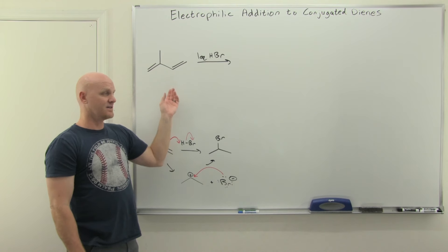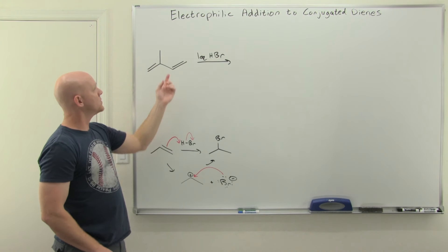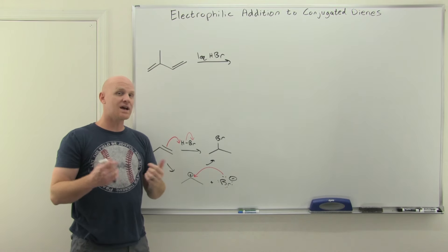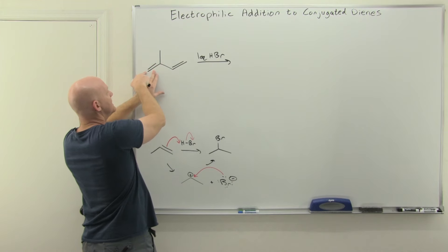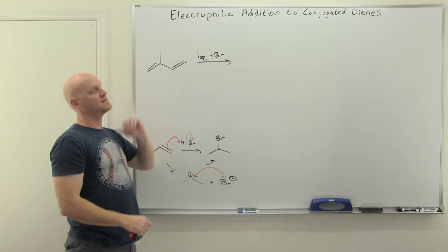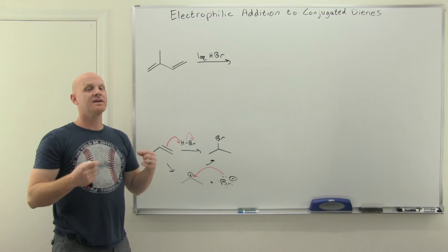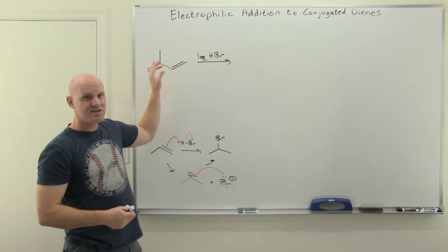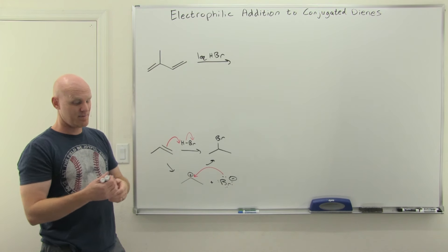When you've got a conjugated diene and you add only one equivalent in one of these electrophilic additions, you have an issue: which alkene is the one to more likely react first? That depends on which one can produce the more stable carbocation. If you look at the alkene on the left, the H could either add here or here. With a conjugated system, more important than adding to the less-substituted side is getting a resonance-stabilized carbocation. So in principle you have four possible carbocations to consider.